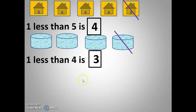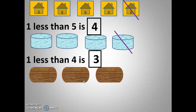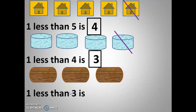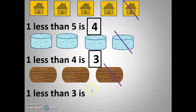Now next: wooden locks — we have three wooden locks. The question is one less than three. I am going to cut one. When I cut one, how many remain? One, two — two remaining. Our answer is correct.